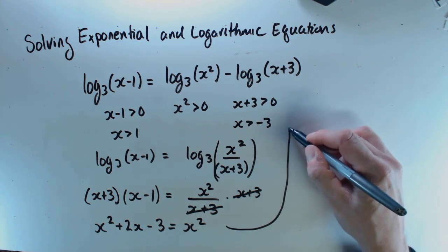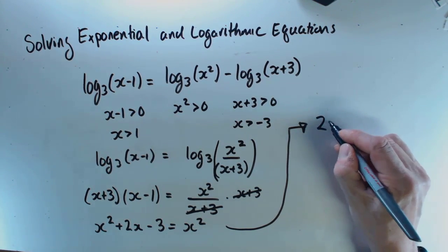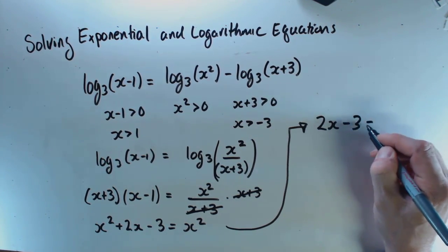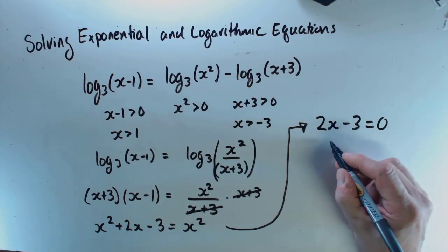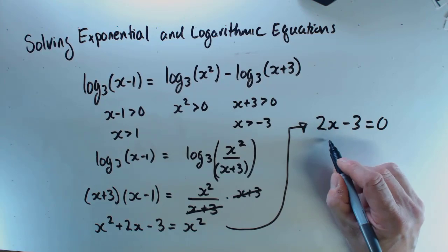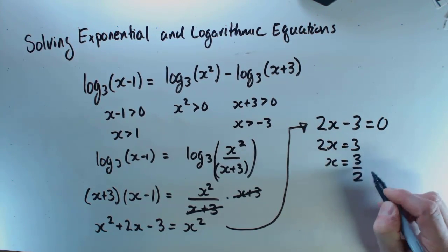So fortunately, the x squared terms disappear because I really don't want to solve a quadratic equation today. And when I subtract x squared from both sides, it's all going to disappear. And so 2x minus 3 equals 0, so 2x equals 3, so x equals 3 halves.